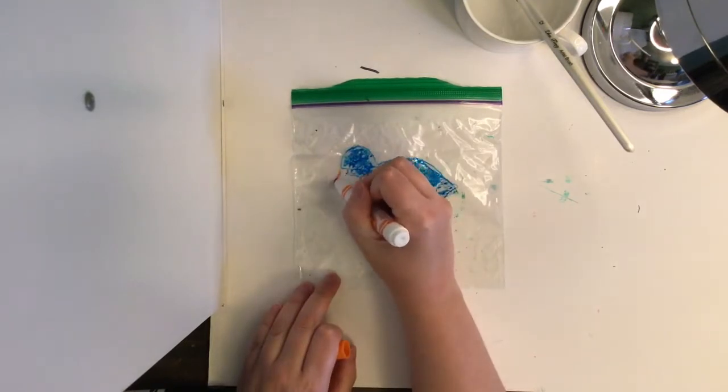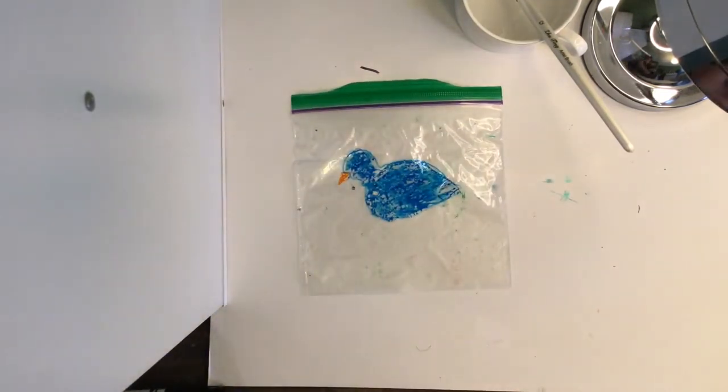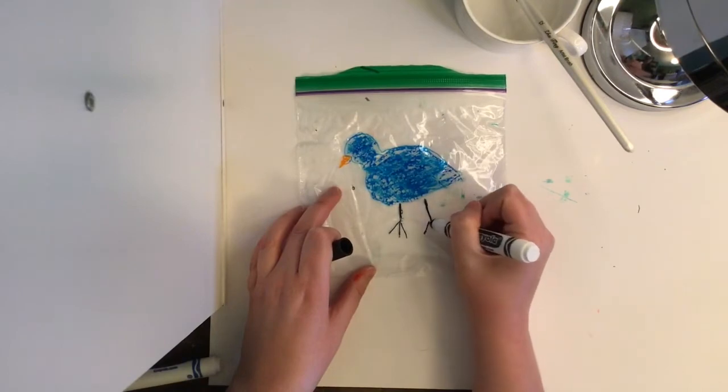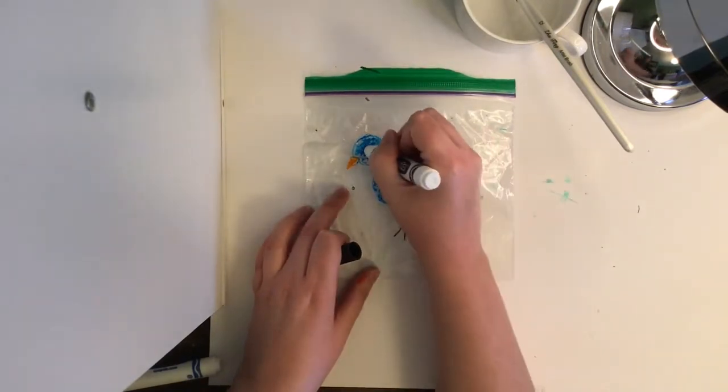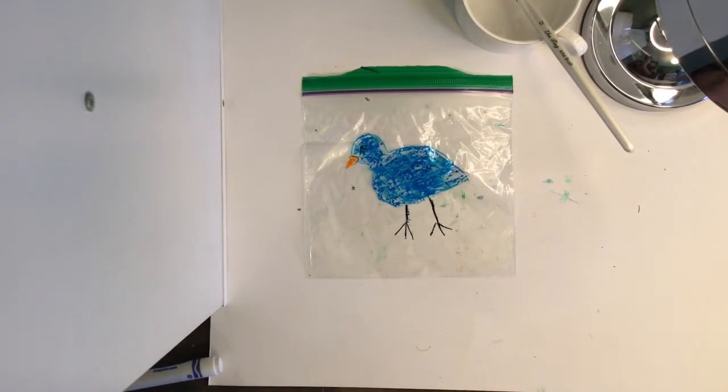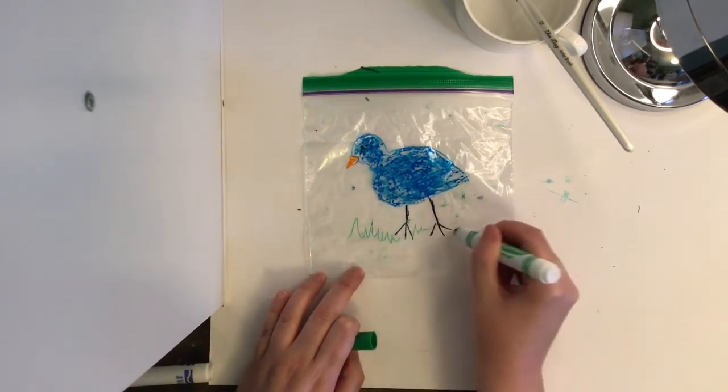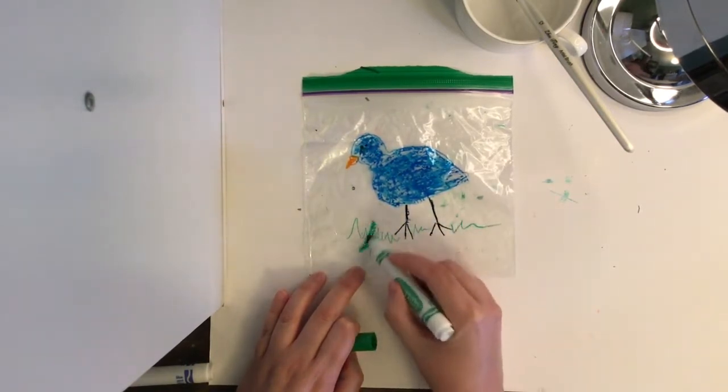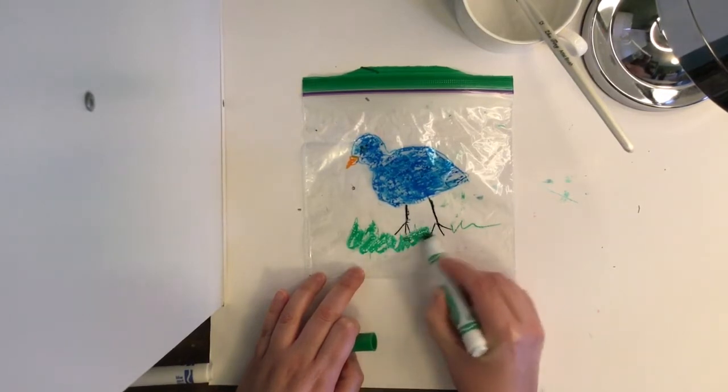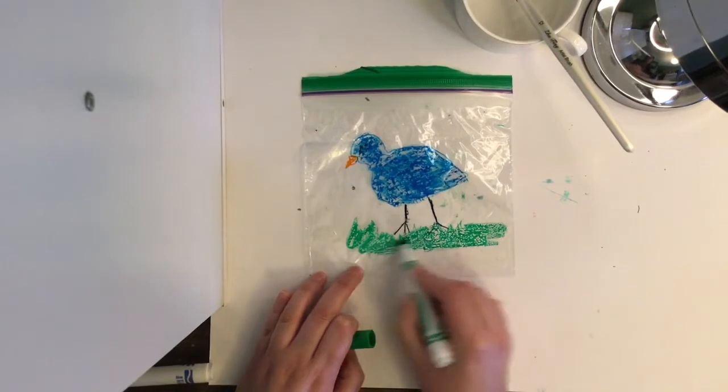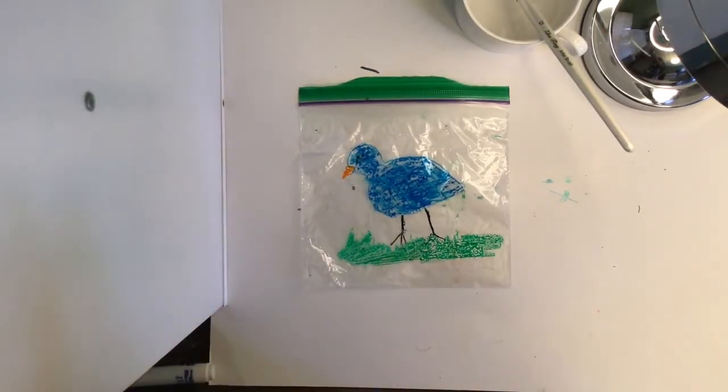Give him a beak. Give him some little legs, little feet. An eye. And then maybe I'll just give him some green grass to stand on. And again, I'm going to turn my marker on its side so that I can fill up more area. Okay, so there's my drawing.